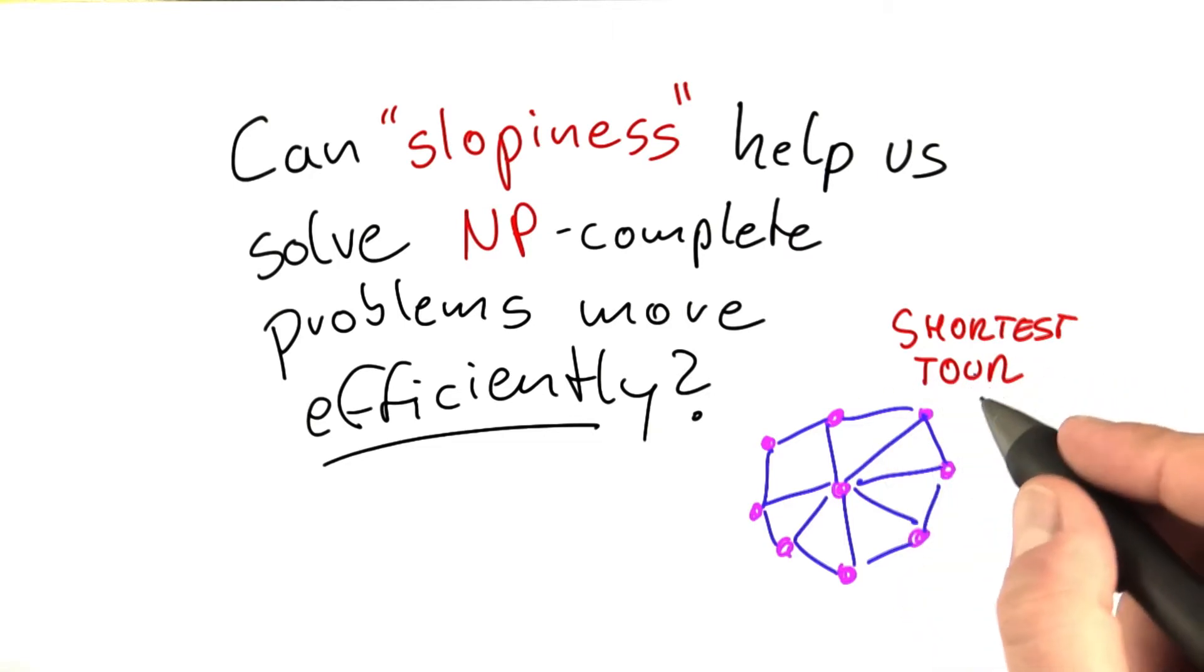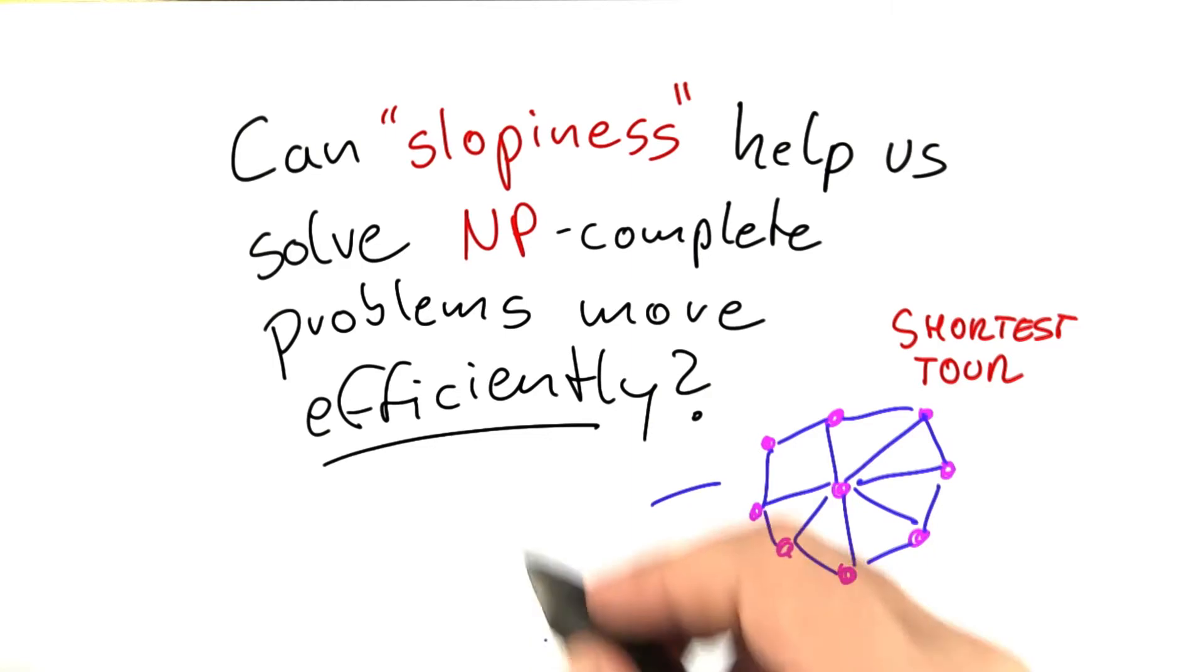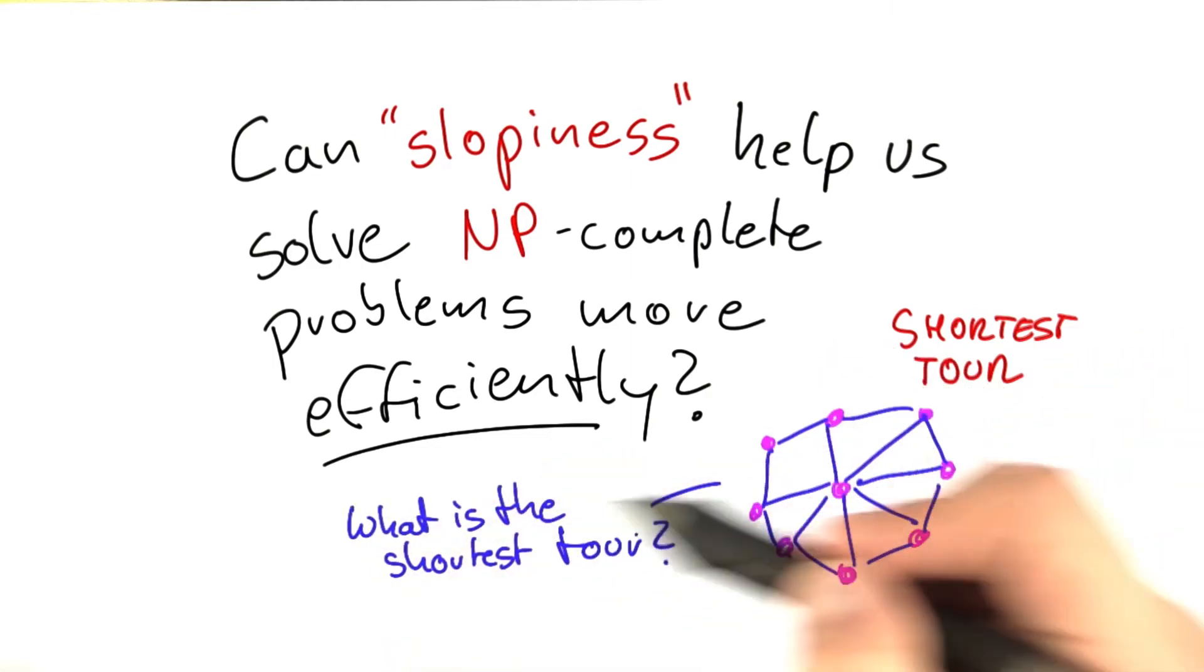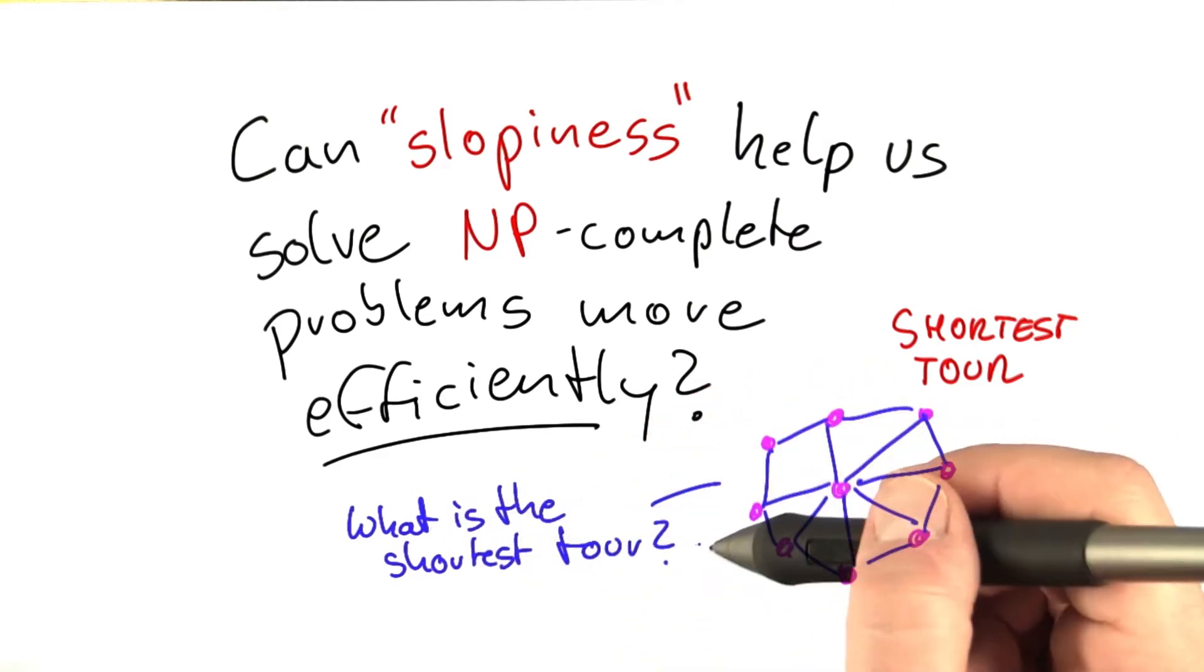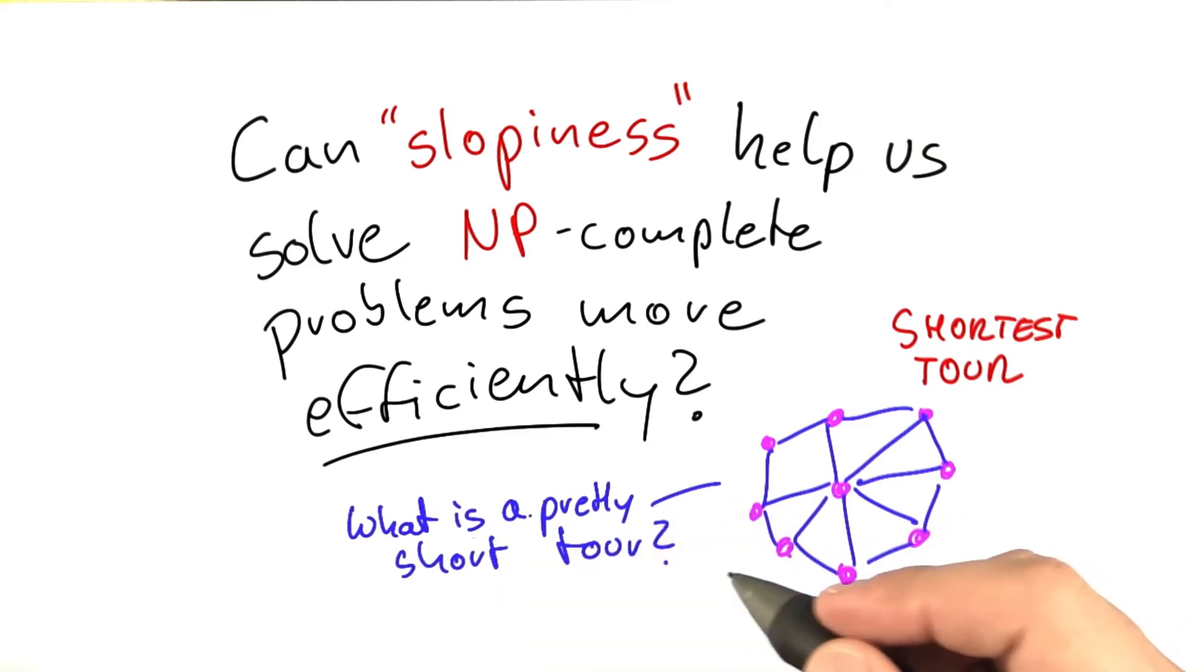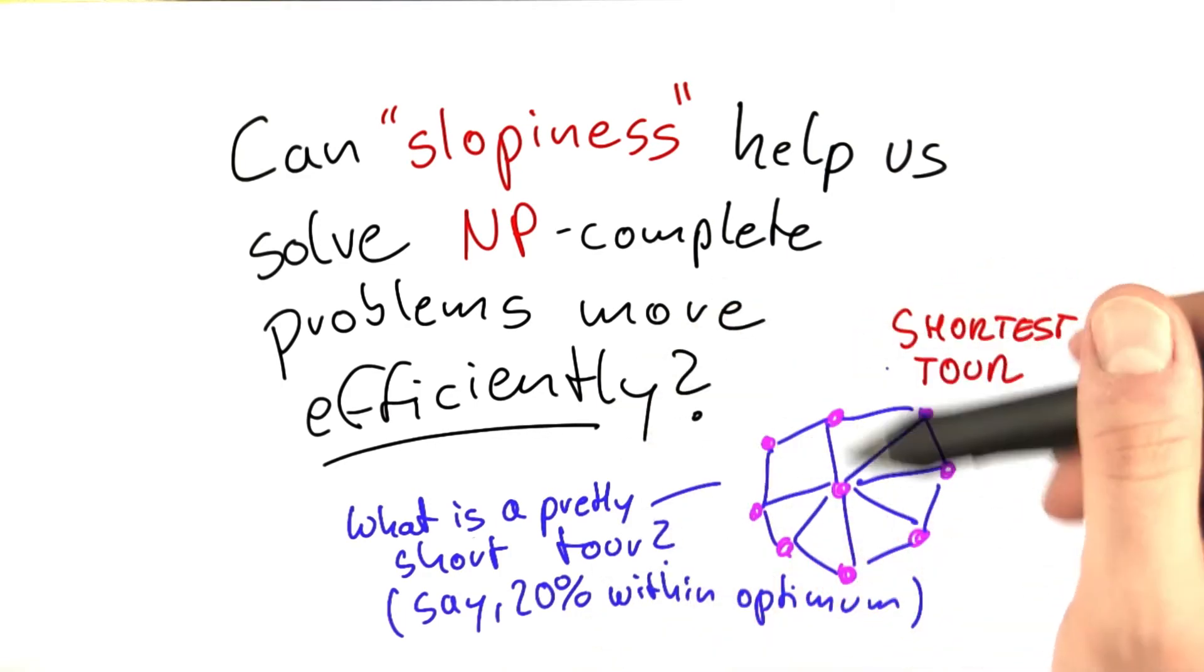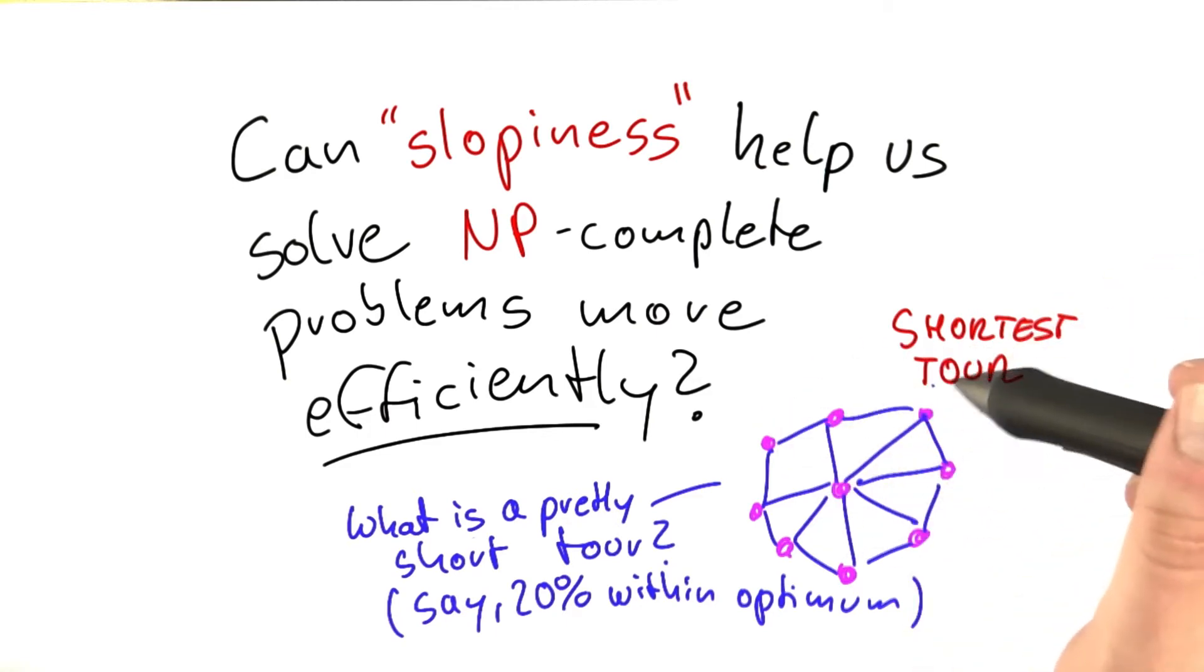And what I mean by sloppiness is the following. Let's say we wanted to solve shortest tour. What we always asked was very demandingly, what is the shortest tour? No excuses, no leeway, no sloppiness. But what happens now if we didn't ask what is the shortest tour, but rather asked, what is a pretty short tour? For example, 20% within the optimum. Then we become less demanding on what the algorithm is supposed to produce. And now of course the question is, will this allow us to construct faster algorithms?